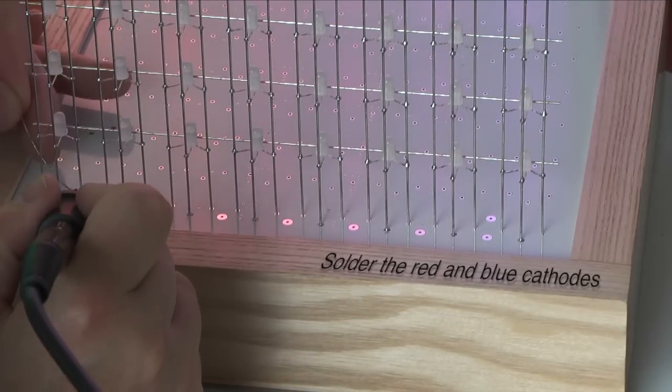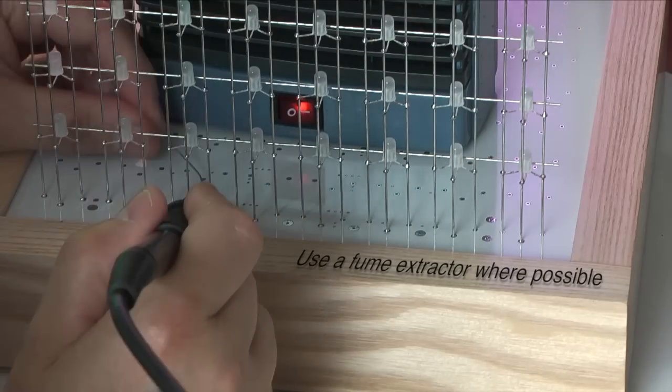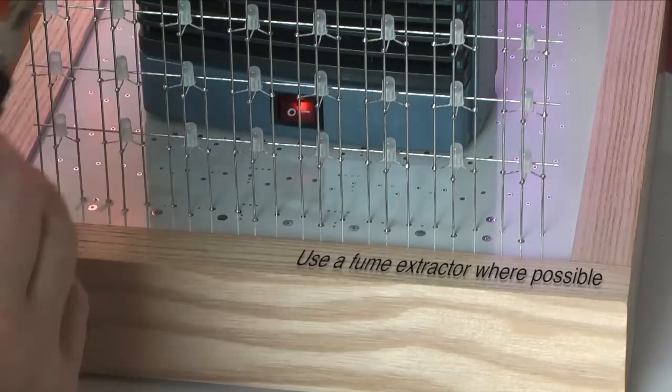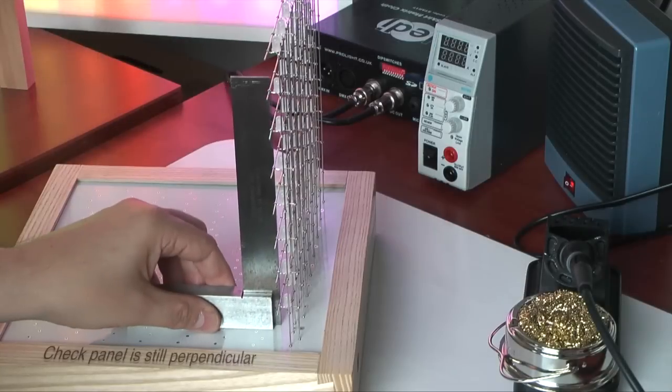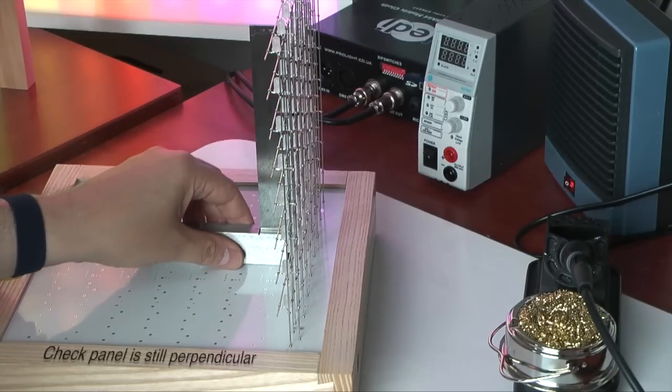The wooden spacer is removed so that the red and blue cathodes can be soldered. When doing a lot of soldering I use a fume extractor where possible. One final check to make sure the panel is perpendicular.